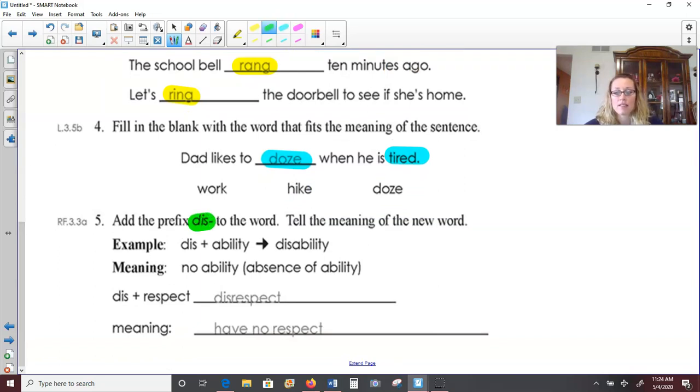Number five, add the prefix dis to the word and then tell the meaning of the new word. Dis plus ability means, you know, it makes the word disability and it means to have no ability. So if we add dis and respect together, we're going to get the word disrespect. And since dis means no, the meaning is no respect. Having no respect.